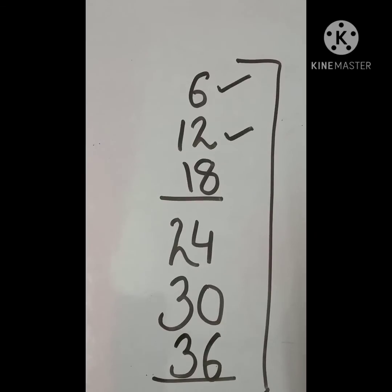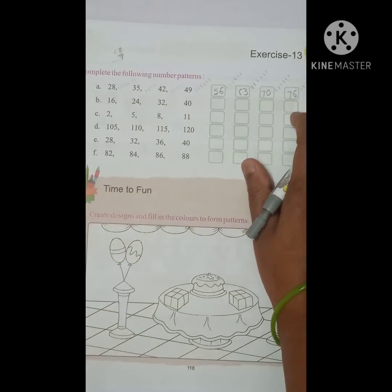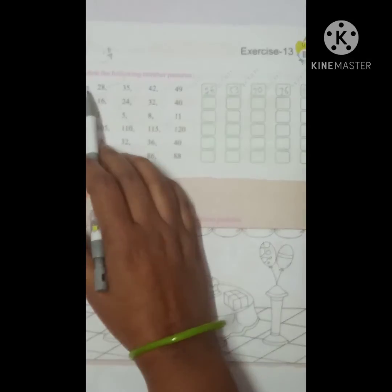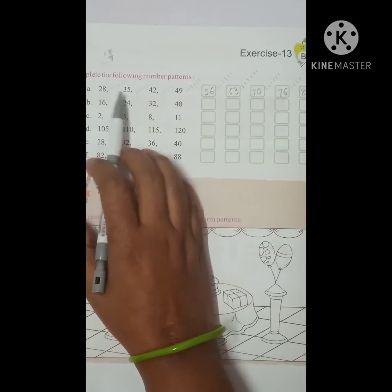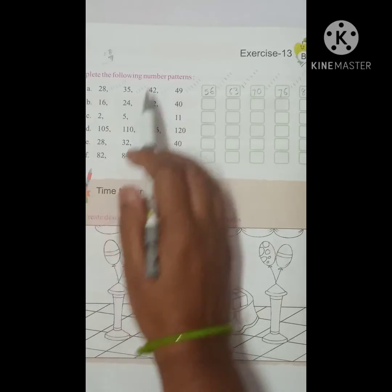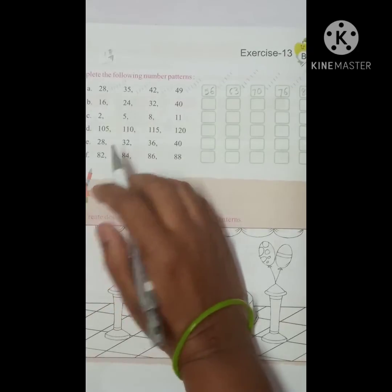Now we have to be clear about what you have to do and how you have to do it. Let's do exercise 13.B. We will do question A: 28, 35, 42, 49. We have to follow the pattern. If you understand the pattern, you will be able to continue it.